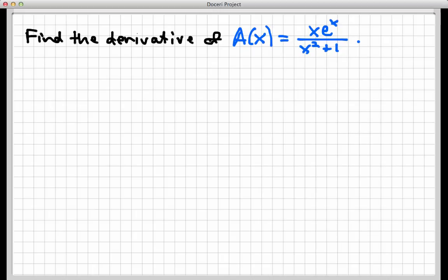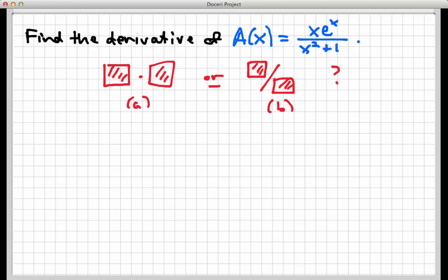Is this function A(x) more structured along the lines of the product rule, where I have one thing times another? Or is it more structured like a quotient rule problem, where I have one thing divided by another? So I would like you to pause the video and think about this question. Is the most appropriate rule to apply first in this problem, taking the derivative, the product rule, which I'll just label A, or is it going to be more like a quotient rule problem, like I've labeled B?